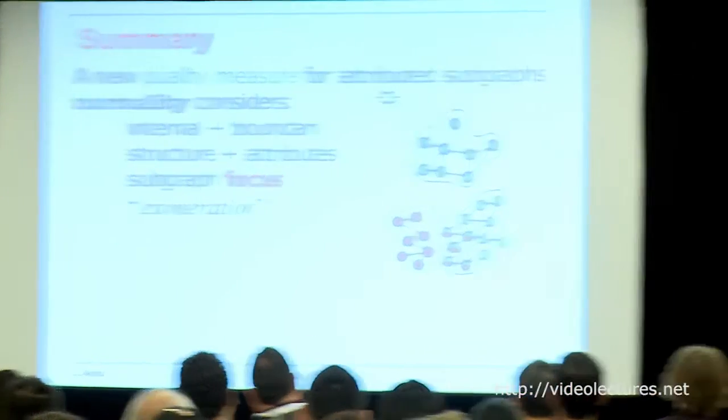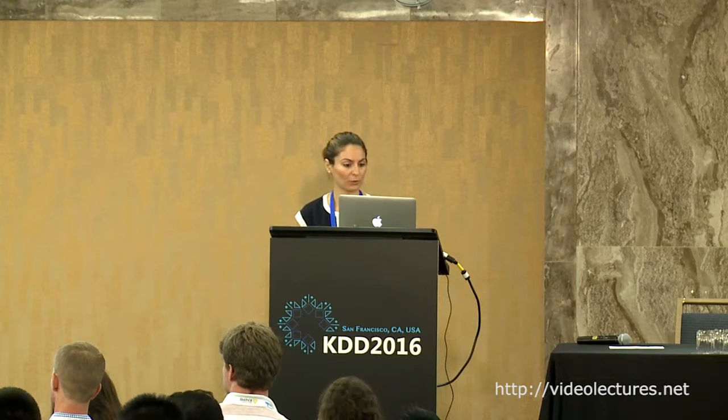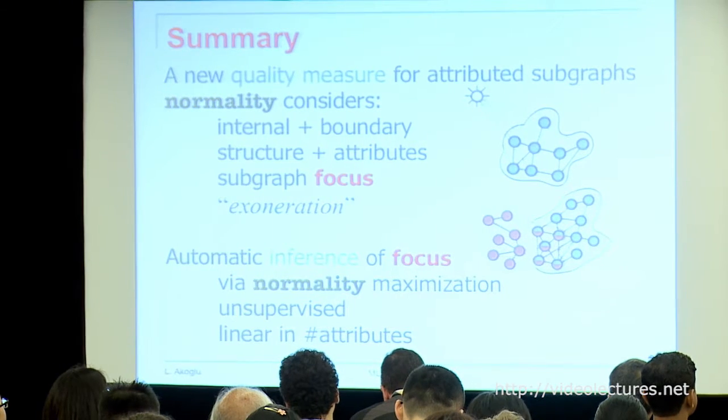In summary, we introduced a new quality measure for scoring attributed subnetworks called normality. It incorporates internal and boundary quality — both structure and attributes. It uses the notion of the focus of the social circle as well as the notion of exoneration. The focus is inferred automatically and the measure scales well in the number of attributes. This is one example of how fundamental graph problems change when we incorporate attribute information.